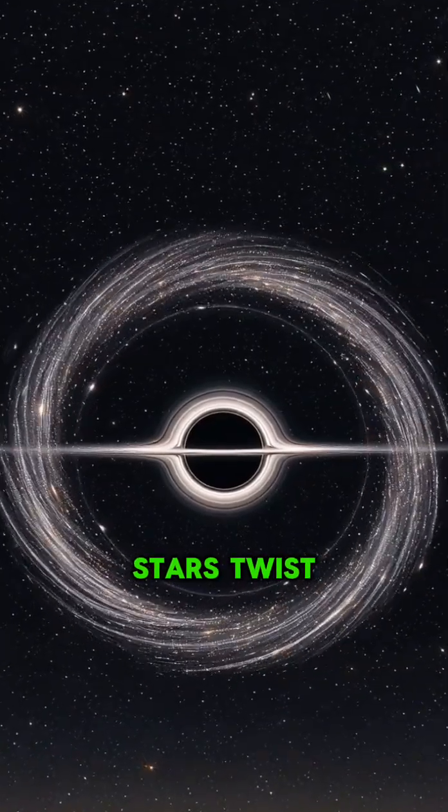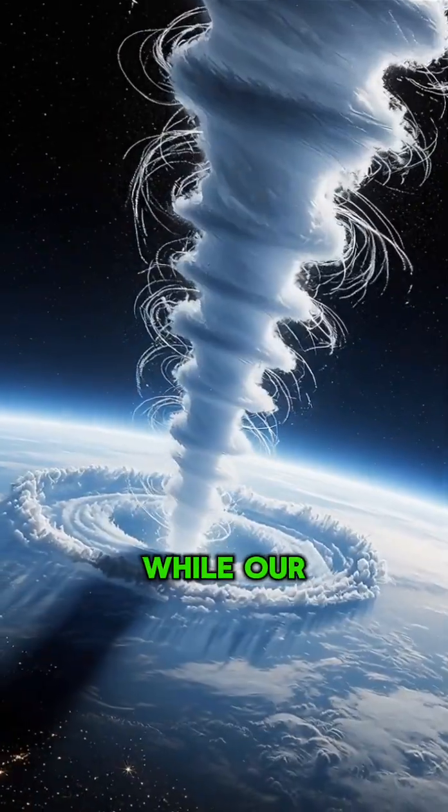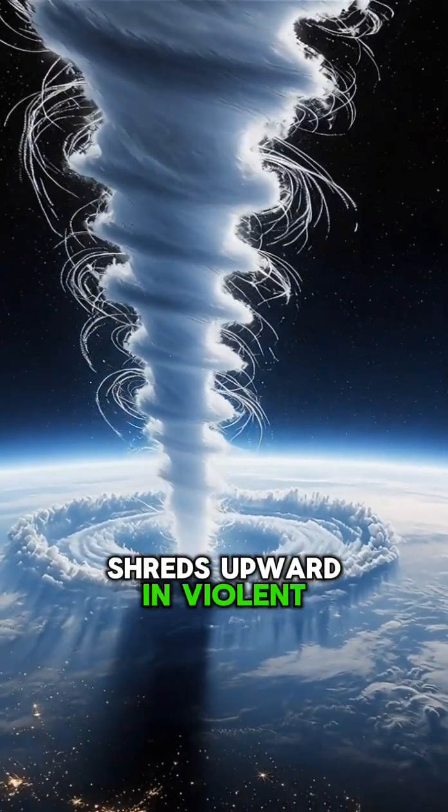Stars twist into glowing rings, light bending under crushing gravity, while our atmosphere shreds upward in violent spirals.